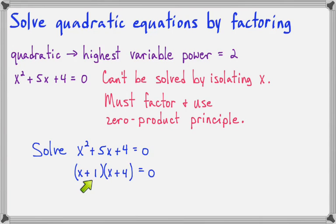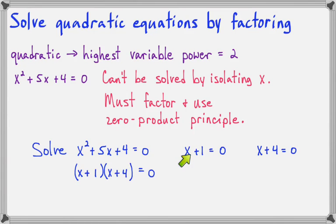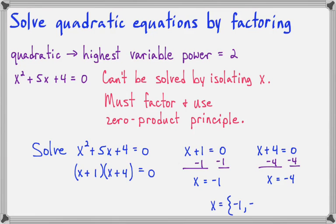Using the zero product principle, if x plus 1 times x plus 4 equals 0, one of these parentheses has to equal 0. If x plus 1 equals 0, we subtract 1 from both sides and get x equals negative 1. If x plus 4 equals 0, we subtract 4 from both sides and get x equals negative 4. So our two solutions are negative 1 and negative 4. The order you list these solutions in is not important.